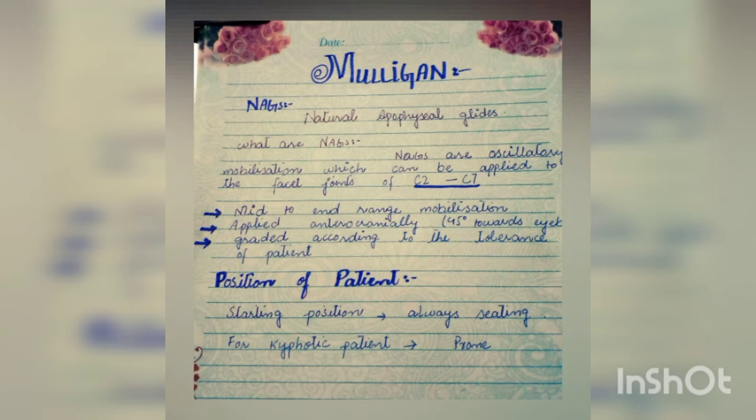What are NAGs? NAGs are oscillatory mobilizations which can be applied to the facet joints of C2 to C7. Points to remember: NAGs are always applied on the facet joints of C2 to C7. These are mid to end range mobilizations, applied anteriorly and cranially — meaning at 45 degrees towards the eyeballs. These are graded according to the tolerance of the patient.